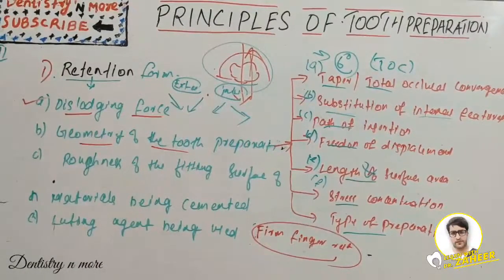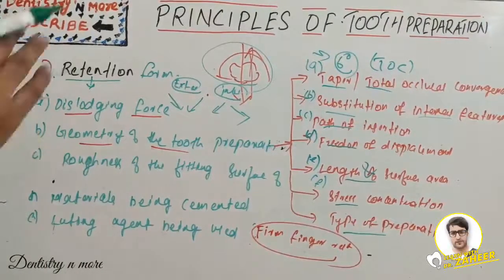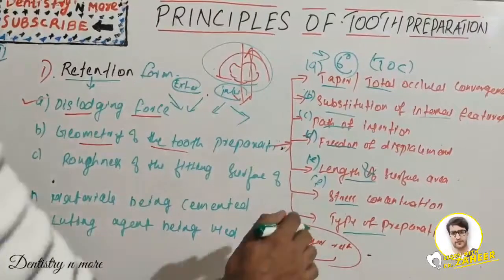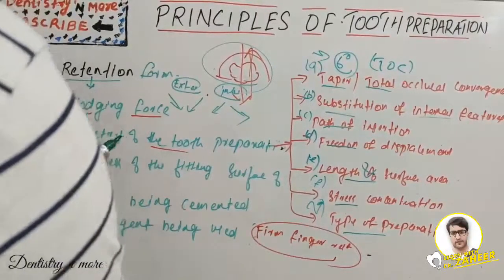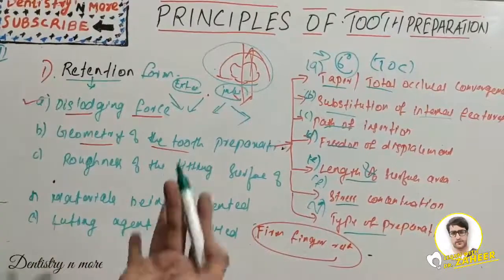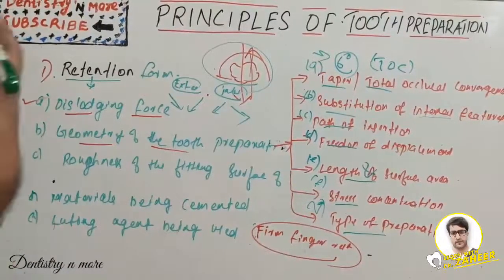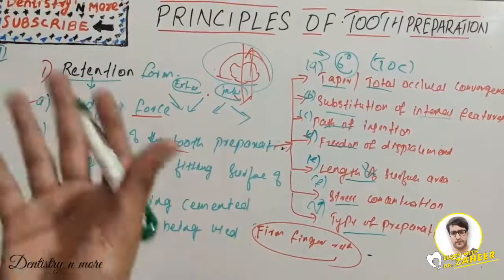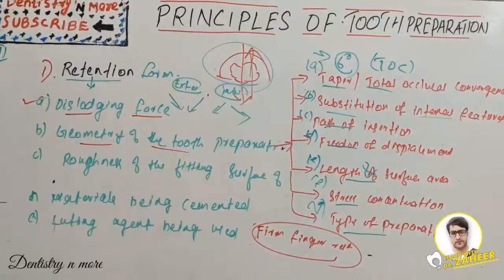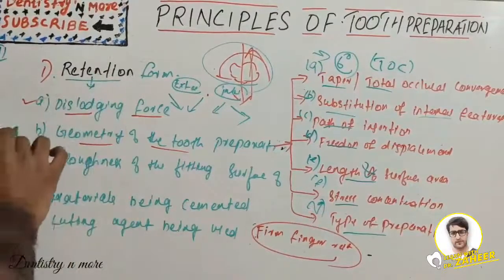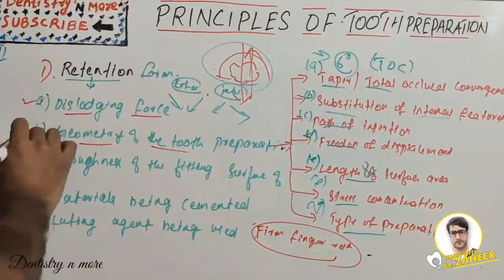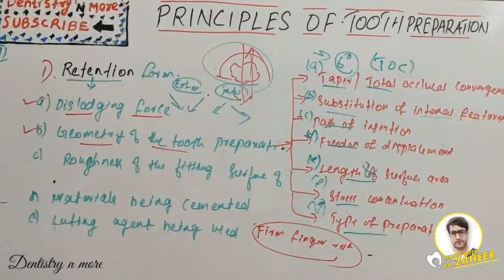Stress concentration occurs around the junction of the axial and occlusal surfaces, so we need to round the internal line angles to reduce stress concentration. Lastly, the type of preparation: a complete crown requires more preparation compared to partial crowns, and we can provide more grooves and boxes which give better retention.